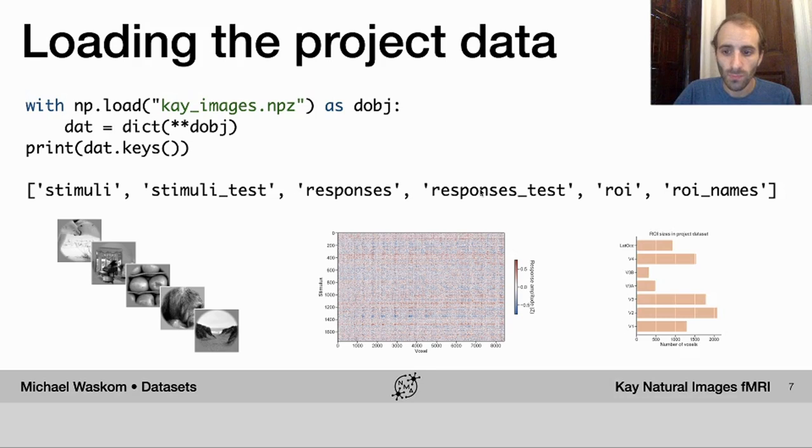The final component of the data set is a vector that tells you which region of interest, or ROI, each voxel belongs to. And so ROI is a vector of indices and then ROI names match those indices to the names of the visual areas. Good luck!